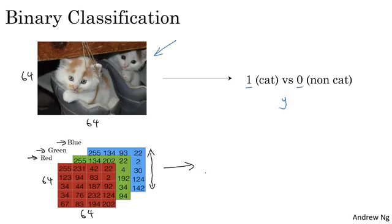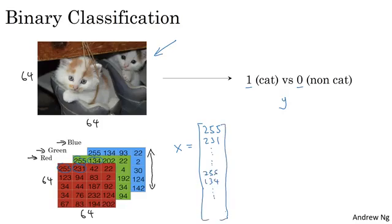So to turn these pixel intensity values into a feature vector, what we're going to do is unroll all of these pixel values into an input feature vector x. We're going to define a feature vector x corresponding to this image as follows. We're just going to take all the pixel values, 255, 231, and so on, until we've listed all the red pixels, and then eventually 255, 134, 255, 134, and so on, until we get a very long feature vector listing out all the red, green, and blue pixel intensity values of this image.